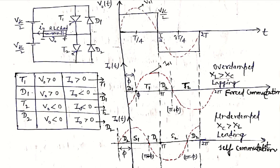Similarly, for the leading load case we can write the switching device conduction. Two important terms are forced commutation and self-commutation. Forced commutation means we have to apply external circuitry to turn off the thyristor switch, because a thyristor can be turned on by a gate pulse but has no internal turn-off provision. If we use a GTO (gate turn-off) switch, external circuitry is not needed, but with a thyristor switch we must apply external circuitry. Self-commutation, also known as load commutation, means the device turns off by virtue of the voltage or current quality — it is the self-commutation or load commutation case.